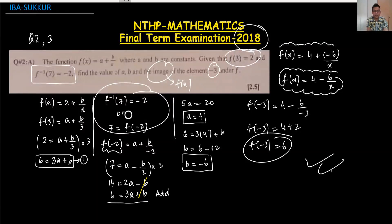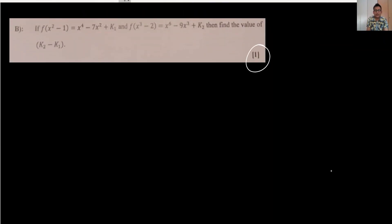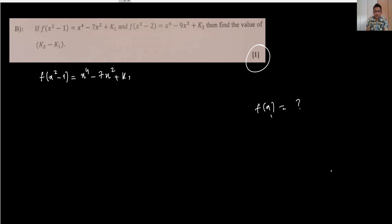This is a very important step — I did not derive the f inverse equation; I simply substituted directly. Moving to part b: f(x² - 1) = x⁴ - 7x² + k1. This means when we substitute x² - 1 into f(x), the equation becomes this after substitution.